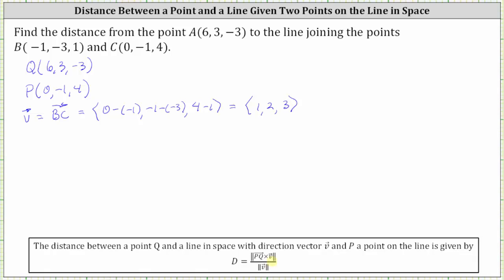Now looking at our formula, we have vector V. We still need to find vector PQ, where point P is a point on the line and point Q is a point not on the line. So let's find vector PQ in component form. The x-component is equal to six minus zero, which is six. The y-component is equal to three minus negative one, which is four. And the z-component is equal to negative three minus four, which is negative seven.